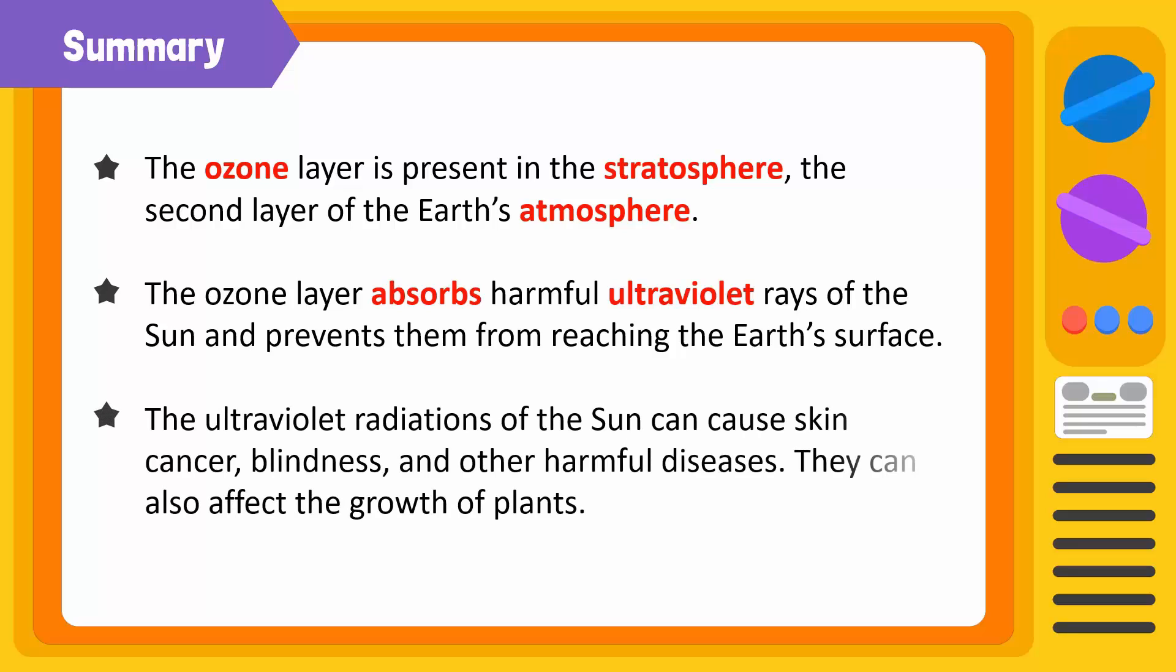The ozone layer absorbs harmful ultraviolet rays of the sun and prevents them from reaching the Earth's surface. The ultraviolet radiations of the sun can cause skin cancer, blindness, and other harmful diseases. They can also affect the growth of plants.